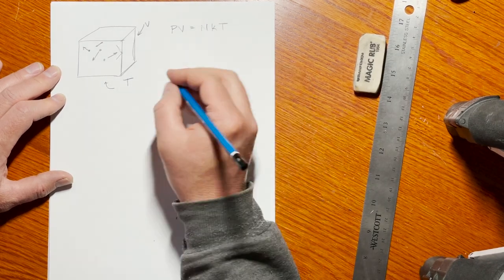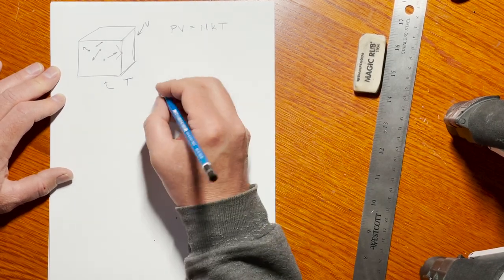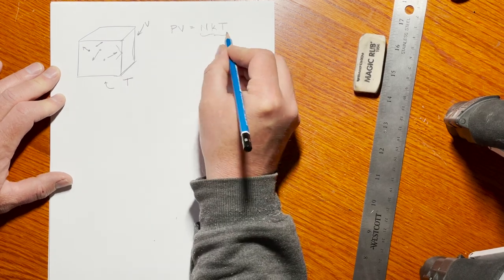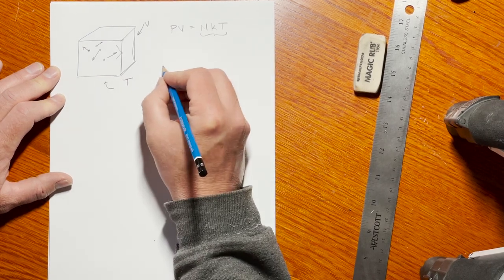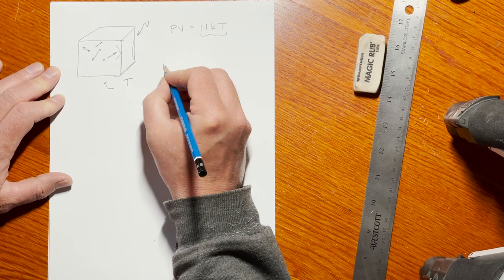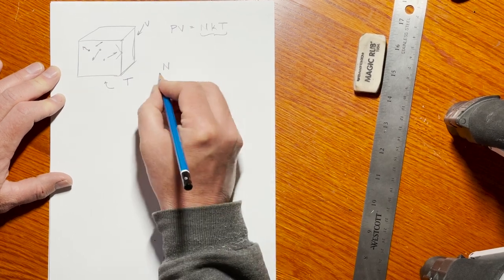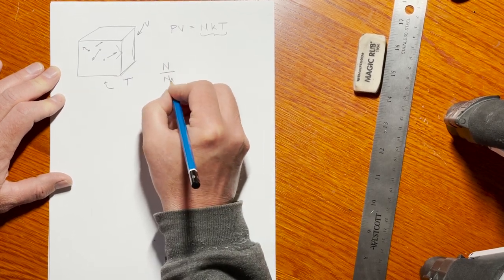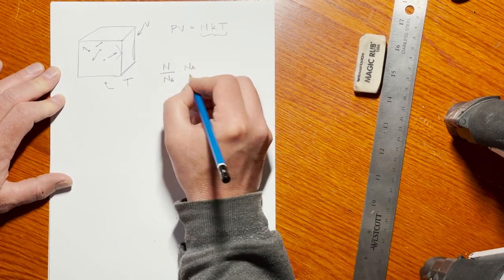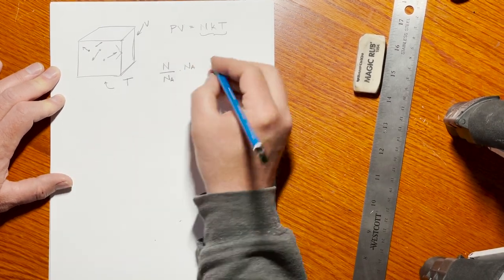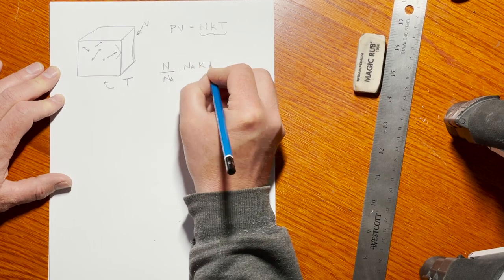We can write that in terms of the number of moles, which you might see in chemistry more often. That's just taking this relationship and rewriting it. The number of moles is the number of molecules divided by Avogadro's number. I'm going to multiply that by Avogadro's number, so I'm effectively just multiplying by one.